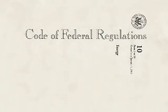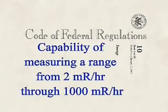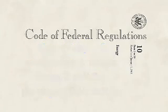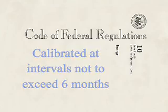Instrumentation requirements include having the capability of measuring a range from 2 mR per hour through 1,000 mR per hour. Each instrument shall be calibrated at intervals not to exceed 6 months and after servicing, except for battery changes.